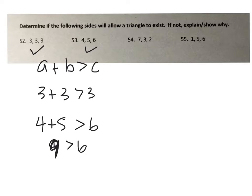On problem 54, with sides 7, 3, 2: 3 plus 2 is not bigger than 7. You're always trying to add up the two smaller sides and see if they add up to be bigger than the third. So 54 is not a triangle.